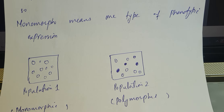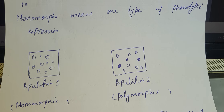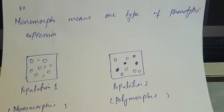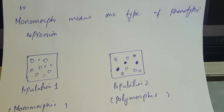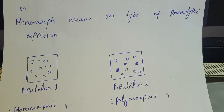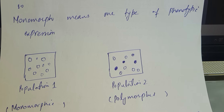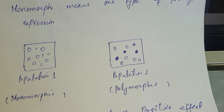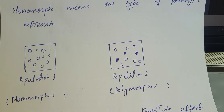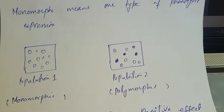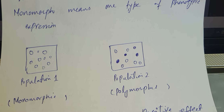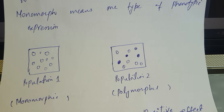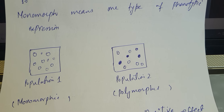In the figure, you can see two populations with ten individuals each. In population 1, all individuals are of the same type — that is, they are monomorphic. In population 2, out of ten members, four are of one type and six are of another type, meaning the population is showing polymorphism — different forms of phenotypic expression.